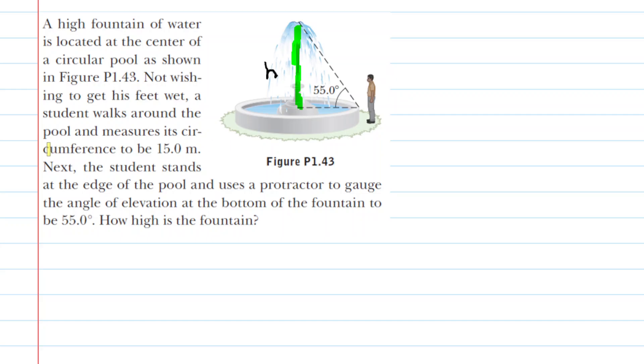The first bit of information we'll work with is the circumference. So what happens is the student starts at an arbitrary point and kind of walks around the fountain like this, and he measures the circumference to be 15 meters.